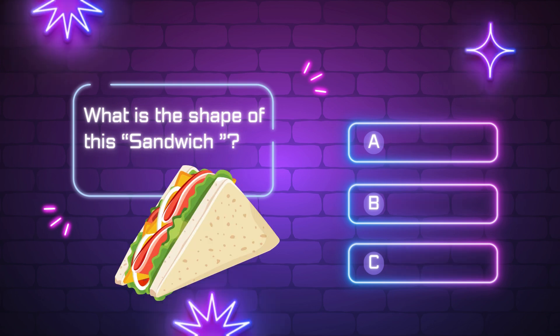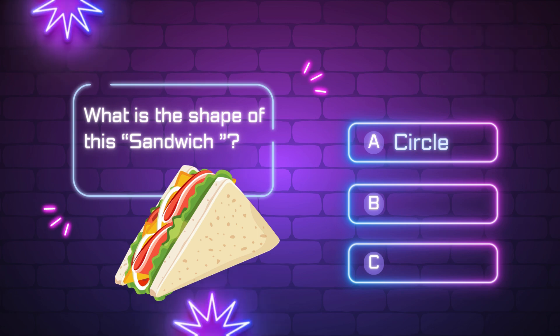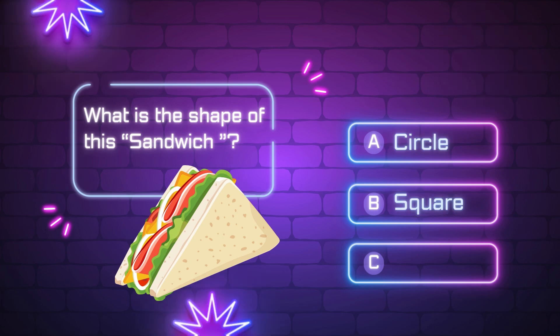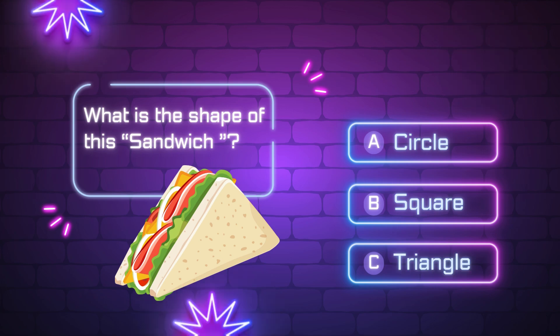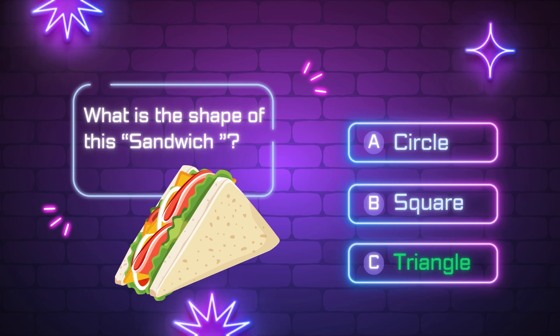What is the shape of this sandwich? A, circle. B, square. C, triangle. Yes, it is a triangle.